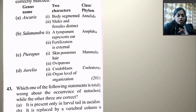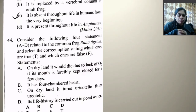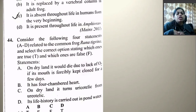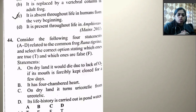Which one of the following statements is totally wrong about the occurrence of notochord while the other three are correct? It is present only in larval tail in urochordates — correct. It is replaced by vertebral column in adult frog — correct. It is absent throughout life in humans from the very beginning — this is wrong, as notochord is present during embryonic development. It is present throughout life in Amphioxus — correct.